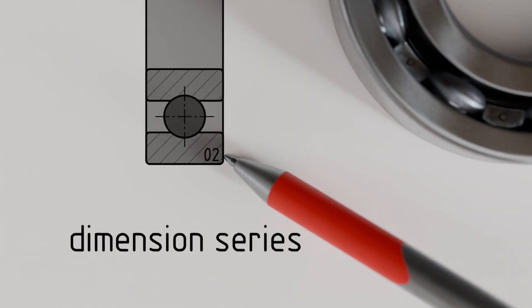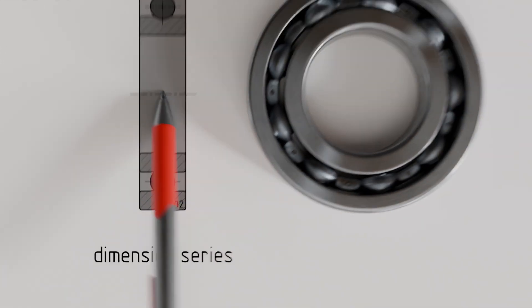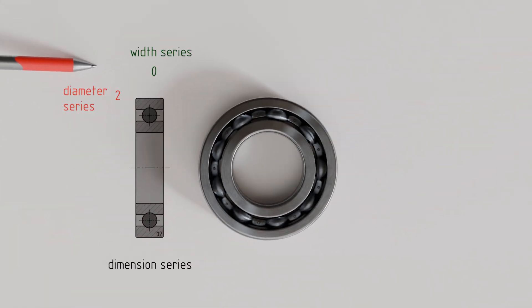A dimension series always consists of two digits. The first number designates the so-called width series and the second number the diameter series. Based on these two digits, specific width and diameter dimensions are assigned to each bore diameter. In our example, the dimension series 0-2 corresponds to a rolling bearing of width series 0 and diameter series 2.